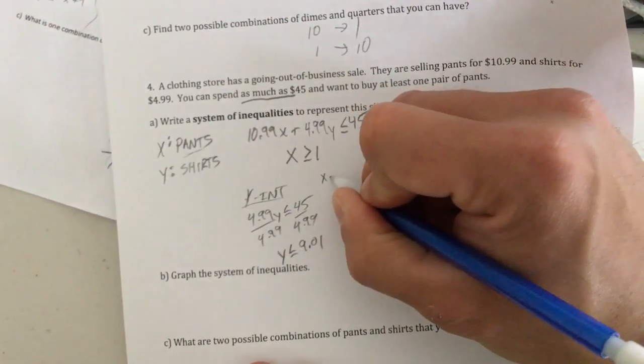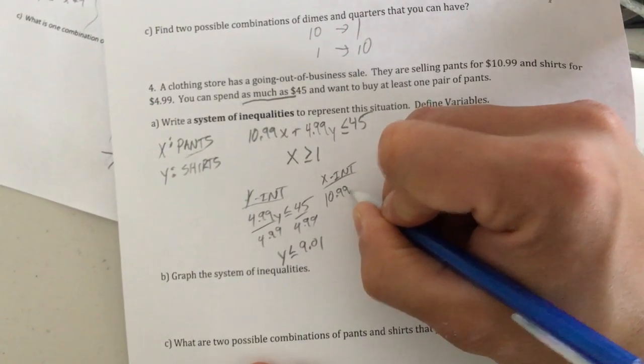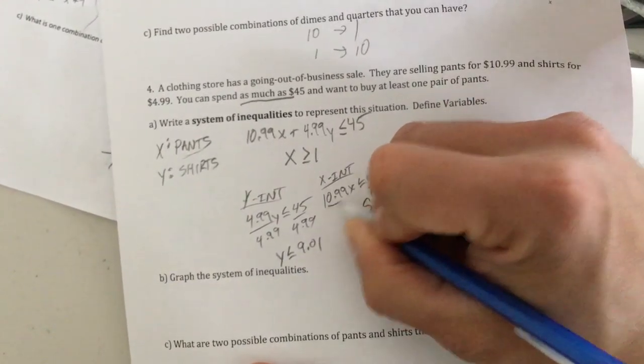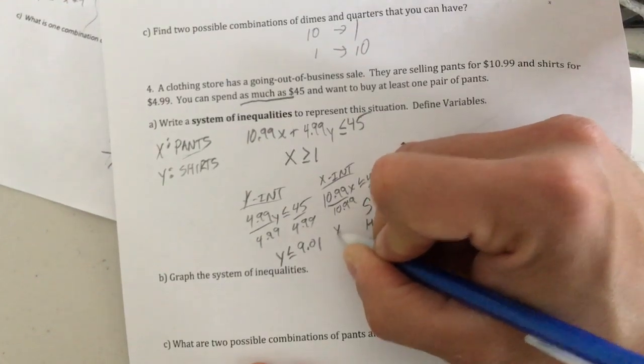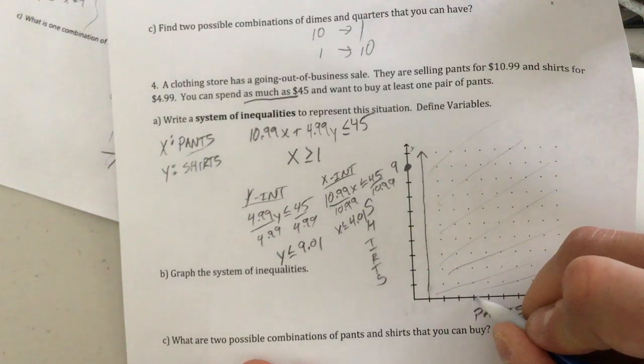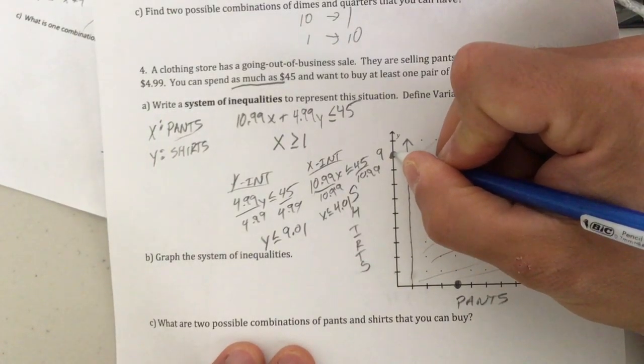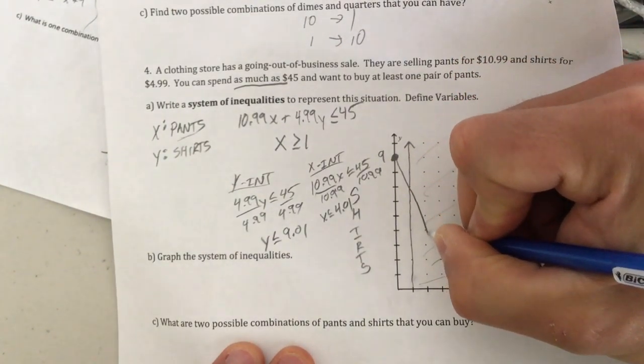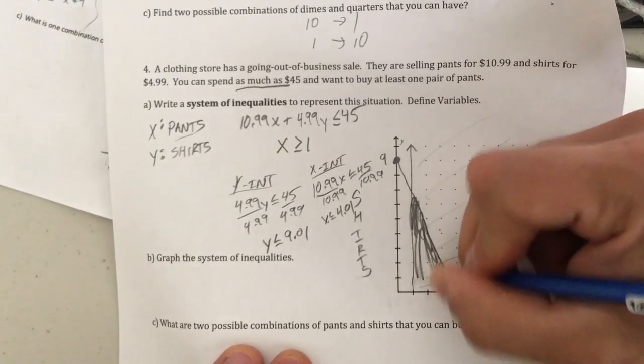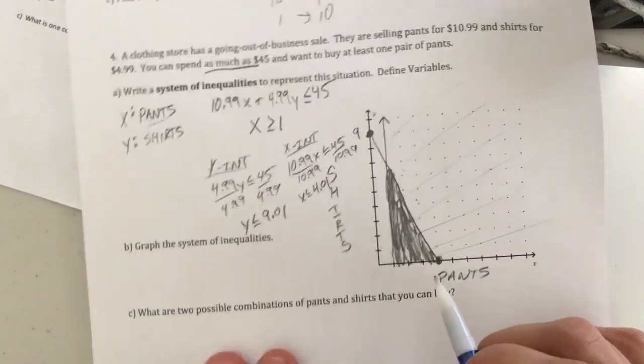Then my X intercept. We have 10.99X is less than or equal to 45 divided by 10.99. Sure enough, X is less than or equal to 4.01. So that would be down here. Because it's strictly less than it's going to be a solid line. So that means right here, because this is less than this is our shaded region right here.